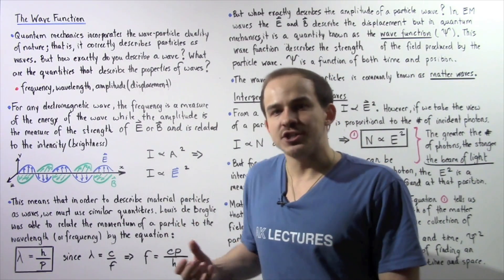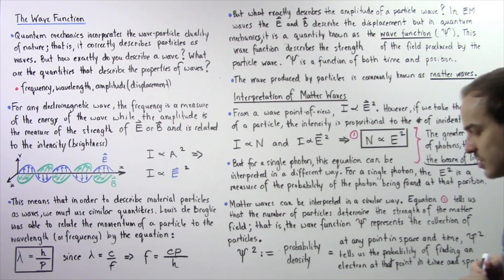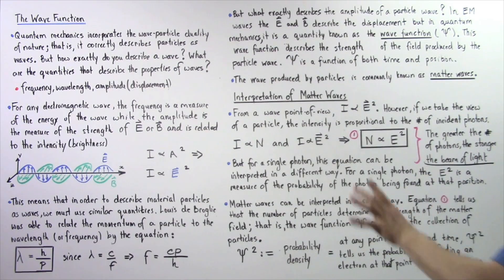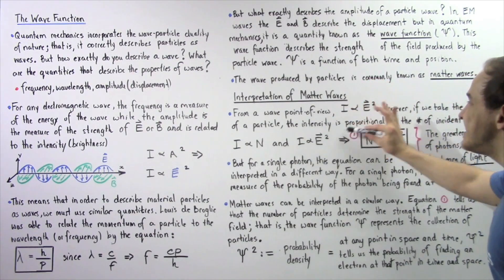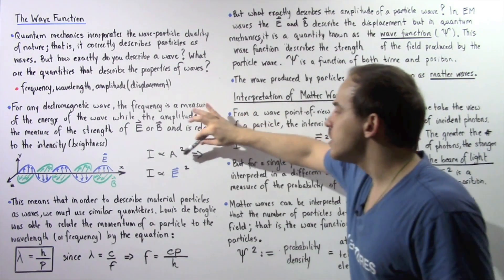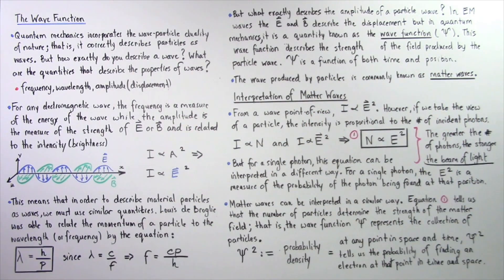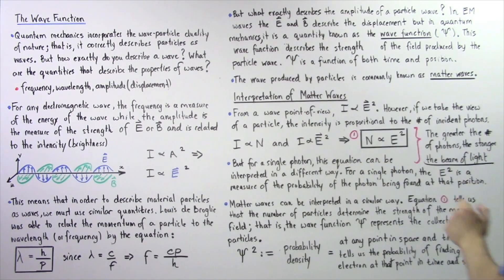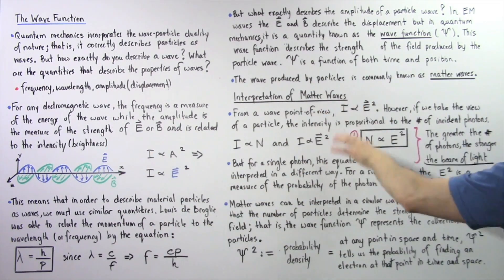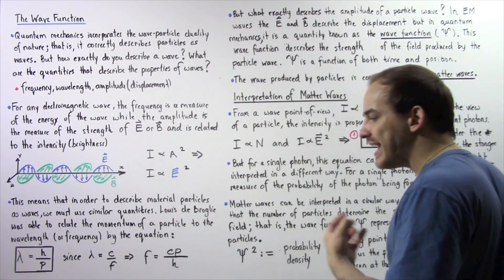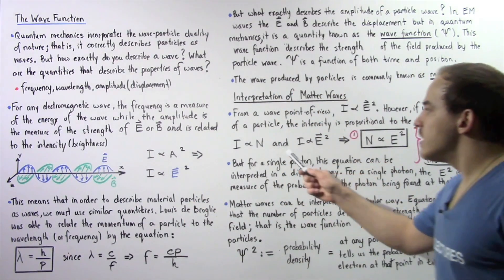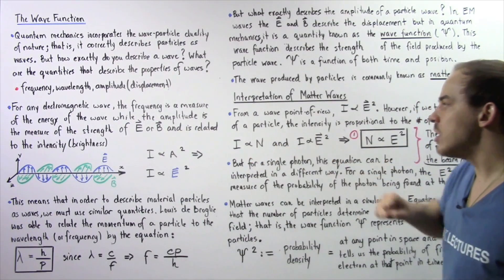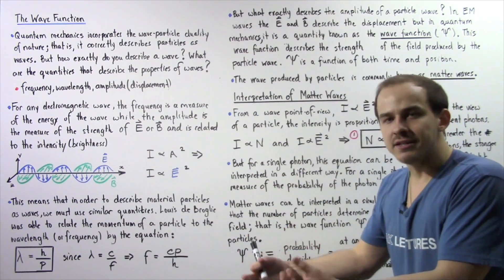How do we interpret and understand what a matter wave is? Recalling electromagnetic waves: from the point of view of a wave, the intensity is directly proportional to the square of the strength of the electric field. From the point of view of a photon, the intensity of the electromagnetic wave is directly proportional to the number of photons incident on some surface area.